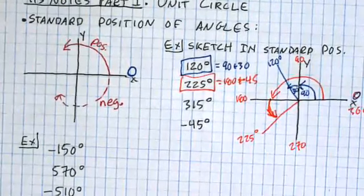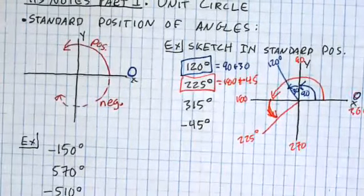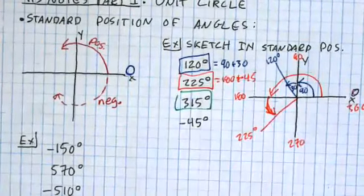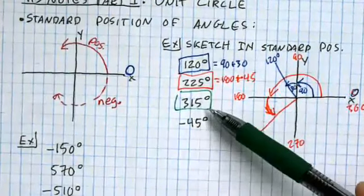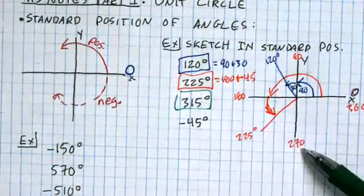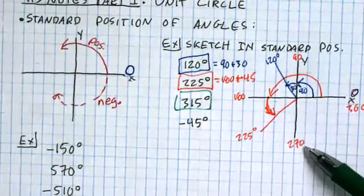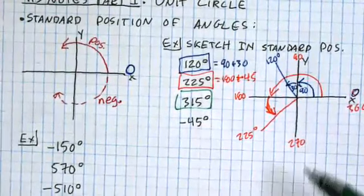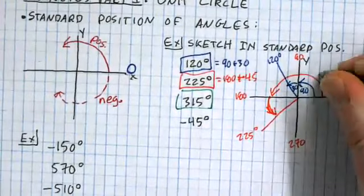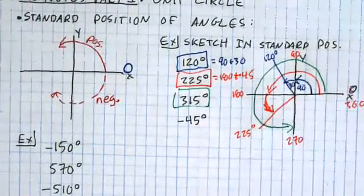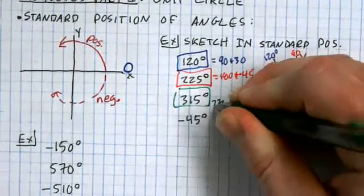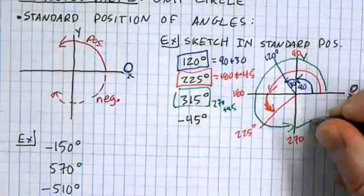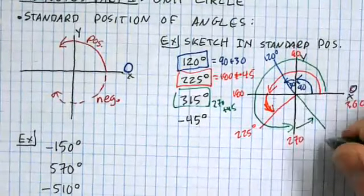315 - in terms of 0, 90, 180, 270, 360, what does 315 make you think of? It's definitely bigger than 180, bigger than 270. How much bigger than 270? So it's 270 plus 45. When I'm thinking about 315, I'm thinking about going three quarters of the way around the circle to get to 270, and then going another 45 on top of that. So that's where 315 would be.